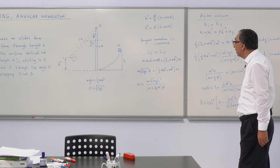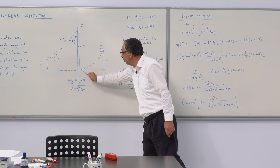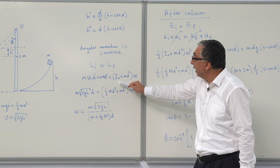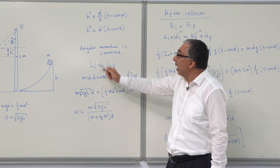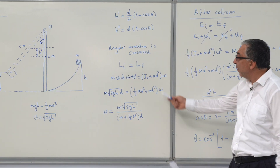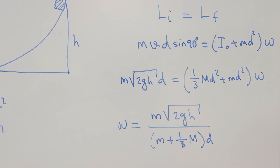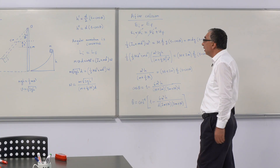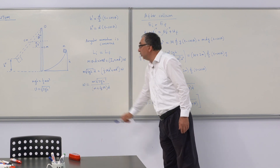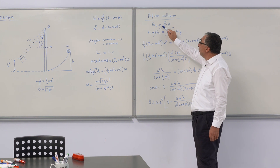The velocity used here is the speed of mass m at the bottom of the incline, which we found earlier. Inserting the rotational inertia of the rod about O as (1/3)Md², we solve for the angular velocity omega of the system just after the collision.